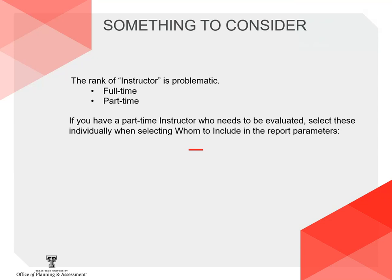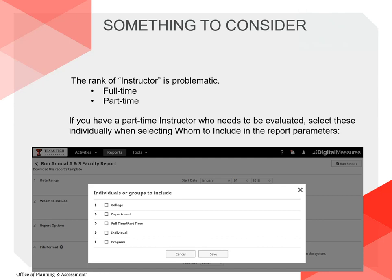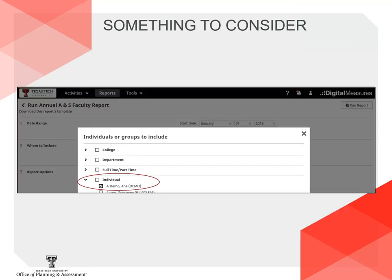The faculty rank Instructor is somewhat problematic because instructors can be either full or part-time. If you selected only full-time faculty members in the parameters you selected earlier, and if you have part-time instructors who need to be evaluated, you will need to go back and select individual part-time instructors by name. Names can be accessed through the individual drop-down within the Whom to Include parameter.